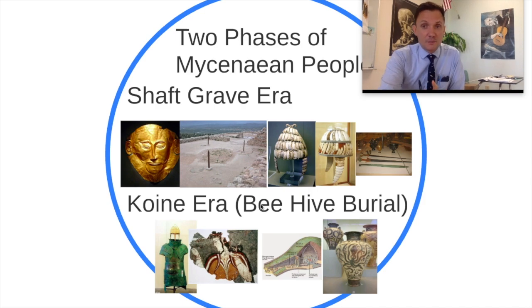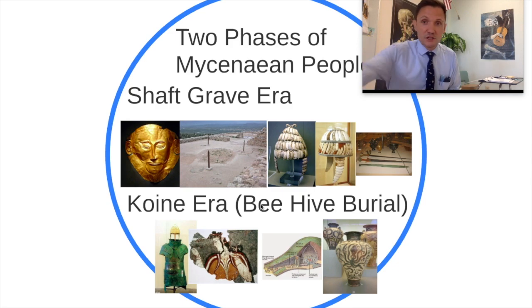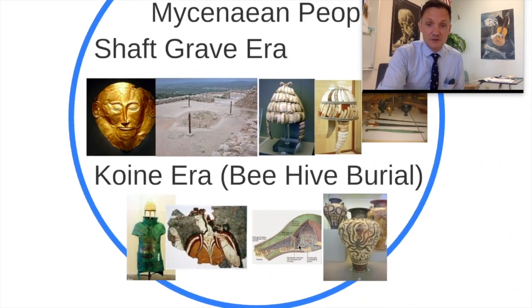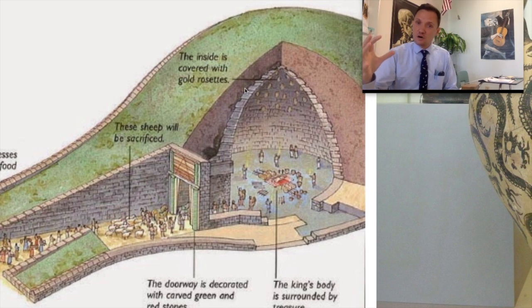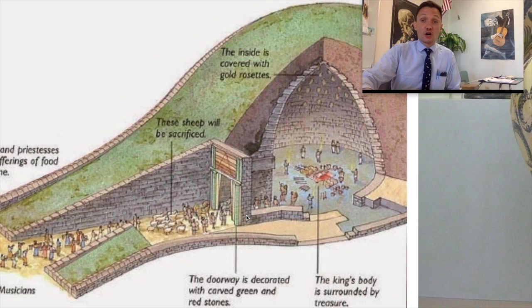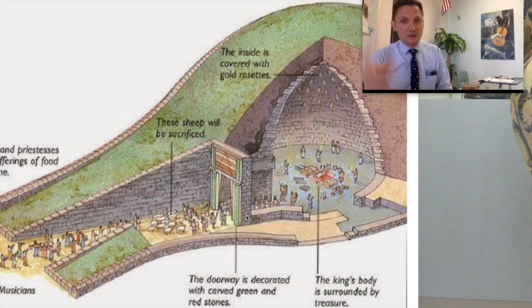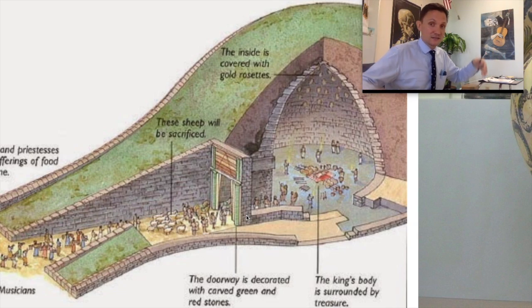Then it moved into a Mycenaean period of extreme development — something called the Tholos era, also known as the beehive burial era, because they started to make tombs that looked like pyramids built underground. Their architecture and intelligence took a dramatic leap forward — the Minoans had really helped them. We're going to stop right here, and tomorrow we'll talk about the Mycenaeans and how they took over the rest of Greece and the Bronze Age collapse. I hope you guys have a great evening. I'll see you guys then. Bye.